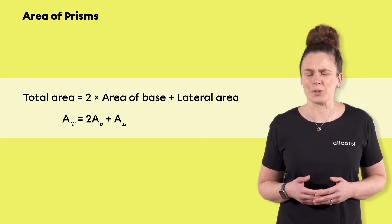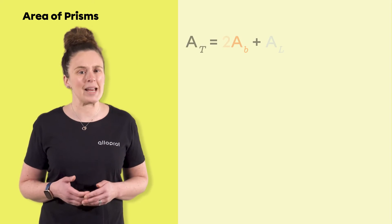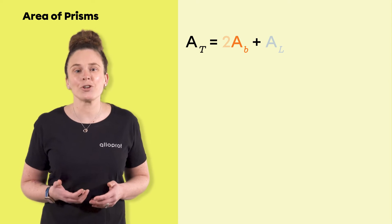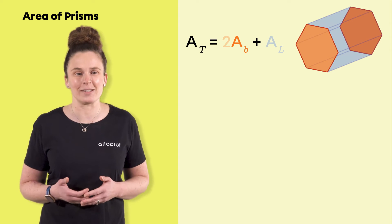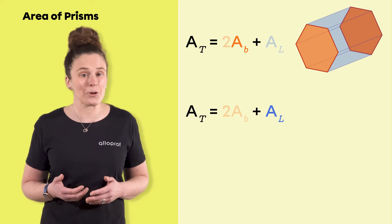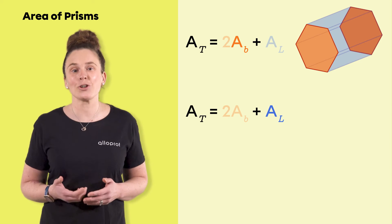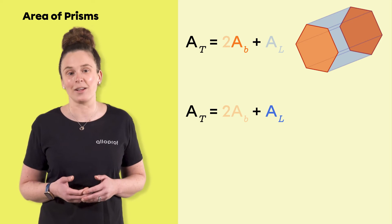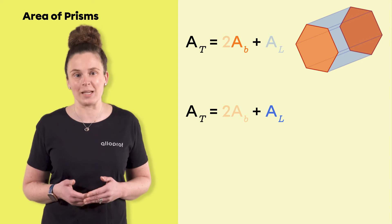Let's look at the formula more closely. The area of a base, generally denoted by A subscript B, is the surface occupied by one of the faces serving as the solid's bases. In our prism, the bases are two regular hexagons. The lateral area, generally denoted A subscript L, is the surface occupied by the faces which do not serve as bases for the solid. In other words, it is the surface of the figures that connect the two bases.